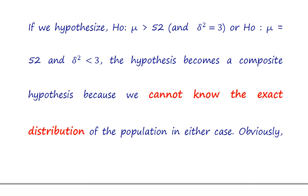If we hypothesize H naught: mu greater than 52 and sigma squared equal to 3, or another condition: H naught: mu equal to 52 and sigma squared less than 3.